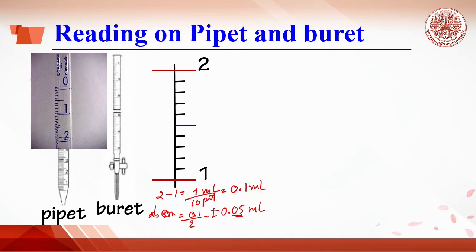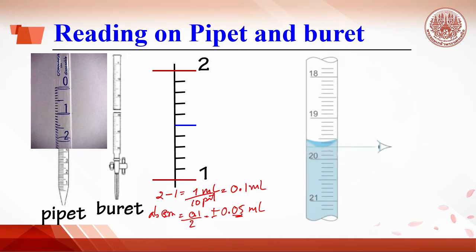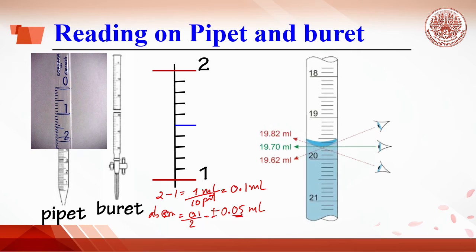It is important to make sure that your eyes are at the same level as the meniscus to obtain an accurate reading. A lower or higher eye level will result in a reading error.